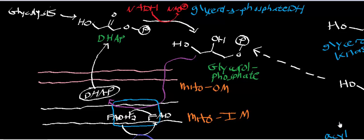To synthesize phosphatidate, we're going to use everyday molecules floating around the cell. Unlike other processes we've seen, this is a process that occurs in many different tissues — in fact, for the most part, in all tissues. When we did amino acid catabolism, we saw that mostly occurred in the liver, but phosphatidate synthesis occurs in all tissues that require fat.